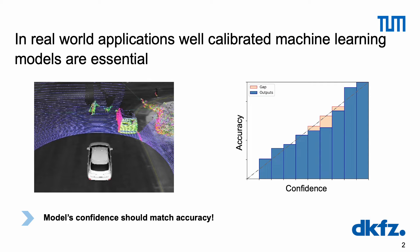Neural network based systems are increasingly used for decision-making in real-world applications due to their high predictive power. Models deployed in such real-world settings require not only high accuracy but also reliability and uncertainty awareness. Especially in safety-critical applications such as autonomous driving or medical settings, a reliable estimate of the predictive uncertainty of models is crucial, meaning that a model's confidence should match its accuracy.